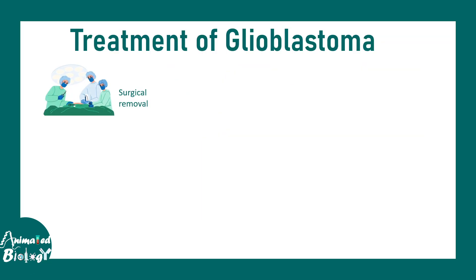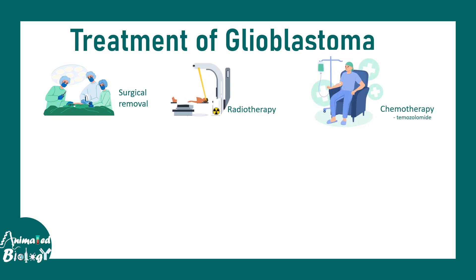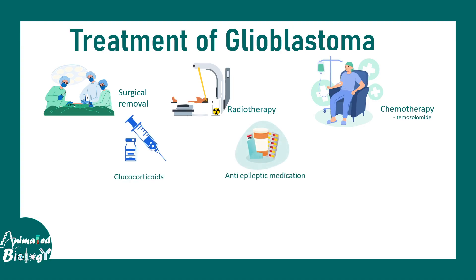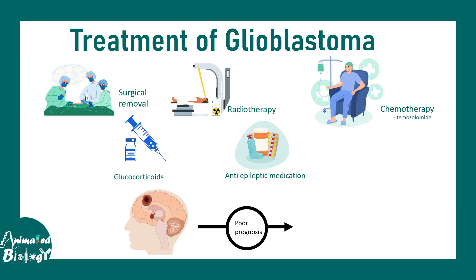Treatment involves surgical removal, radiotherapy, chemotherapy with temozolomide, and glucocorticoids and anti-epileptic medications to help manage the symptoms. But since glioblastoma has a very poor prognosis, most patients die within one year. There is still no complete cure or treatment for glioblastoma.